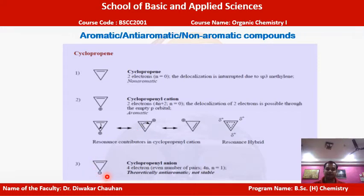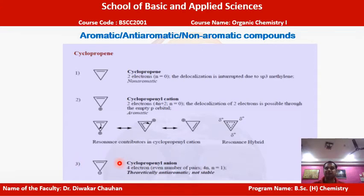Cyclopropenyl anion has one pi bond giving two pi electrons, plus two more electrons from the negative charge, totaling four pi electrons. This follows the 4n rule (n=1) rather than the 4n+2 rule. Since it is cyclic and follows the 4n rule, it is theoretically anti-aromatic — though anti-aromatic compounds are less stable than aromatic ones.